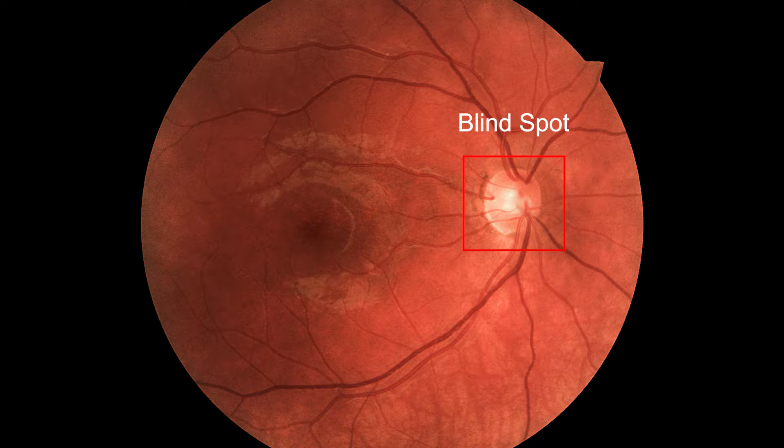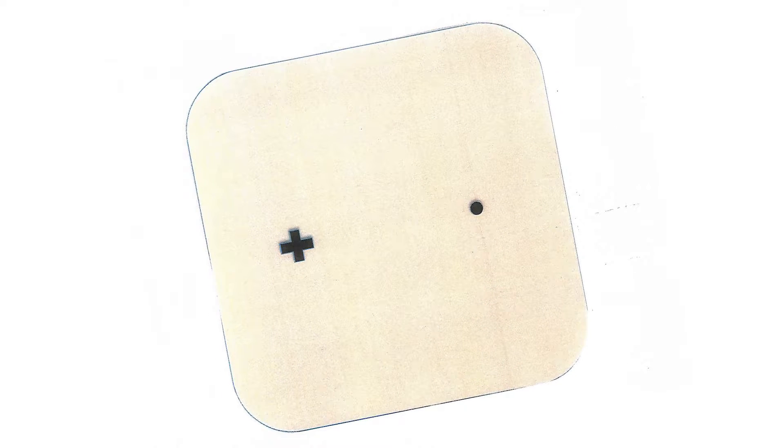Now the blind spot itself is very slightly above the level of the fovea, so if you wanted to you could slightly rotate the plus sign so it's slightly lower. With your right eye closed, make sure you maintain focus on the spot and then move the card closer to you or further away from you and try to find the spot where the cross disappears.